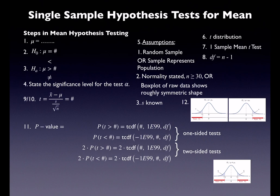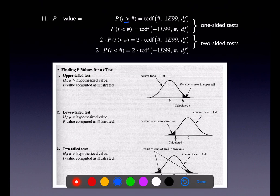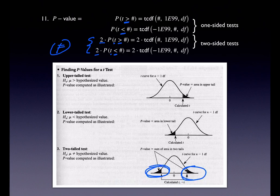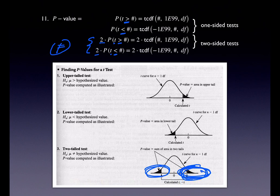Are you going to reject or fail to reject the null? Do you have evidence or not for the alternate? For the p-value: if you have a greater-than alternate, use a greater-than symbol in your probability statement. If you have a less-than alternate, use the less-than symbol. If you have a not-equals-to alternate and your t-score is positive, use greater-than and double it for symmetry. If your t-score is negative, use less-than and double it for symmetry — just find the area of one tail and double it.